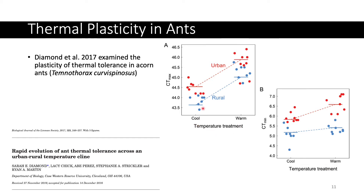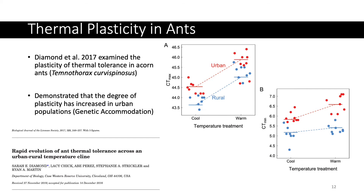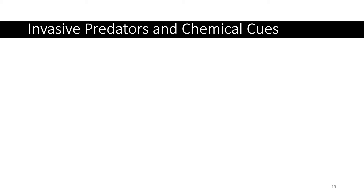Regardless of whether they were reared in cool or warm temperatures, urban populations always show higher thermal tolerance. However, in panel B, urban populations have evolved a higher thermal minimum, meaning they can't tolerate colder temperatures. There's plasticity to their thermal minimum that doesn't exist in the rural population — when urban acorn ants are reared in warmer environments, their thermal minimum goes up, meaning they can't tolerate temperatures as cold as when reared in cool environments. And regardless, they cannot tolerate temperatures as cold as rural populations. This is a great example of evolved plasticity via genetic accommodation.